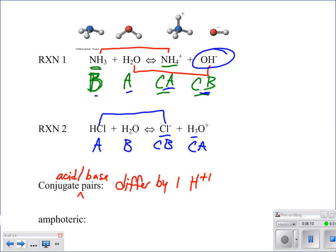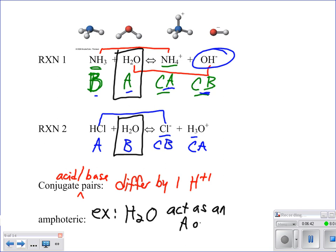A couple things we can notice here. If I look at my water in these examples, I see some differences. In one case, it's acting like an acid. In another case, it's acting like a base. There's a special term for that, and that term is amphoteric. The example we're going to mention here is water. But amphoteric is just a substance that can act as an acid or a base.